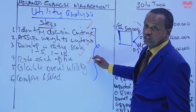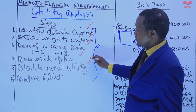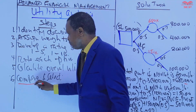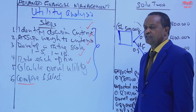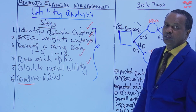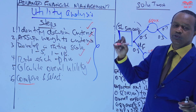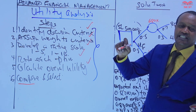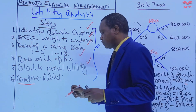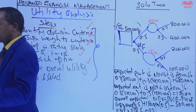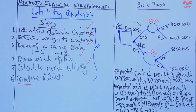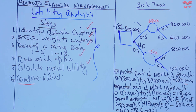We have calculated the overall utility for each project. Now we compare — comparing the overall utility scores of the options and selecting the option with the highest score. Project B, expansion into a new product line, has the highest score, so we select it.